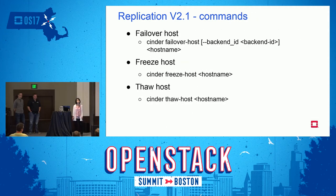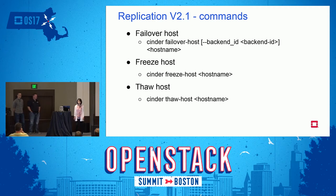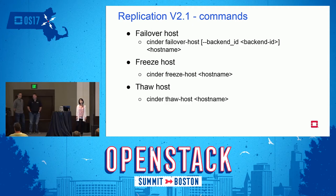There are three replication commands: failover, freeze, and thaw. The failover command fails over all replication-enabled volumes to the replication target; volumes that were not replication-enabled will become unavailable after that. The freeze command disables the Cinder volume backend to protect existing resources so no changes are allowed until you fix the setup and run thaw. The thaw command re-enables the volume backend.